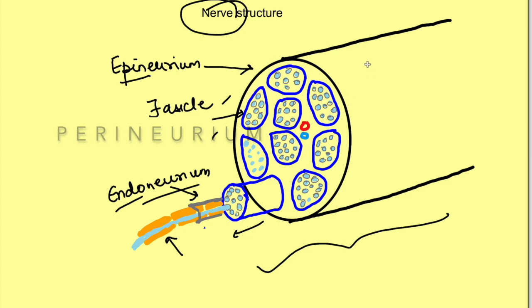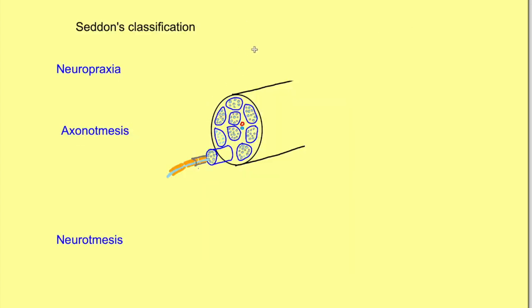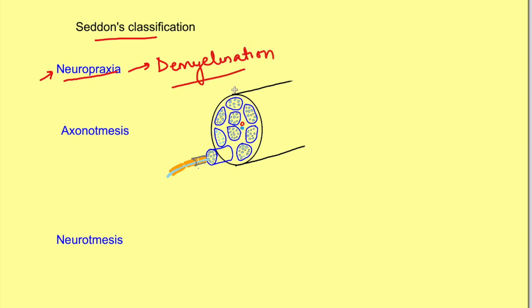The severity of a nerve injury is classified depending on how much of this structure is affected. There are two main classifications. The first is Seddon's classification. The first level of nerve injury is neuropraxia — in neuropraxia, the entire nerve structure is intact and there is only functional loss. There is demyelination of the neuron which affects nerve impulse conduction, but anatomically the structure remains intact.